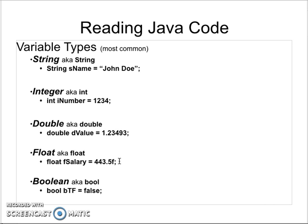Finally, boolean — or bool. A boolean can only hold two values. While it appears to be a string, it is not a string. A boolean can hold either false or true. Do not surround it with double quotes, because then it will no longer be a boolean — it will be a string. This is the only time letters or a word can be used without quotation marks. The double quotation marks are for boolean values — do not confuse the two.